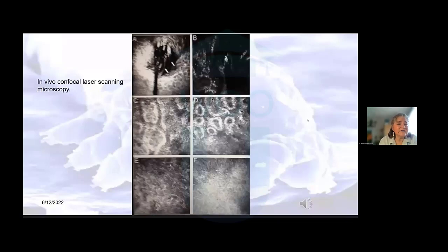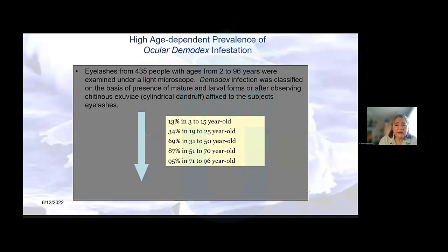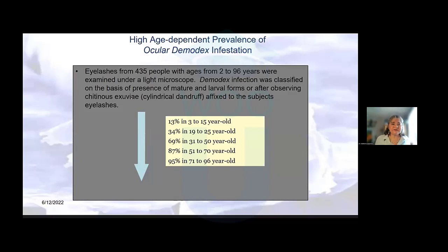If you are lucky enough to have a confocal laser microscope, you can identify demodex that way. As a reminder, even though we don't think we have them, we probably do — and the older we are, the more likely we are to find them. This slide calls the cylindrical dandruff the 'chitinous excuvia,' so if someone asks, yes, they have chitinous excuvia. There are a lot of names for the debris that collects along the lash origins, but again, it's hallmark and pathognomonic.